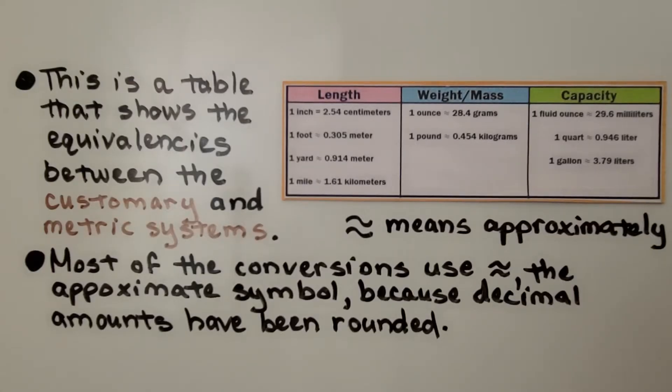This is a table that shows the equivalencies between customary and metric systems, and most of the conversions use the approximation symbol because decimal amounts have been rounded. Let's take a closer look.